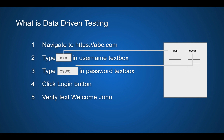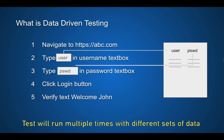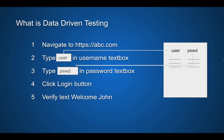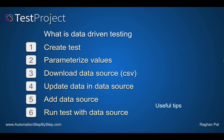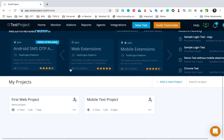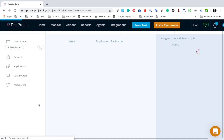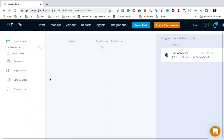The test will run multiple times equal to the number of sets of values in the CSV file or data source. For example, if we have three sets of values for username and password, the test will run three times with all those sets of values. This is how we do data-driven testing. Now let us start the process with TestProject. I have logged into my account and I will go to the web project I created earlier.